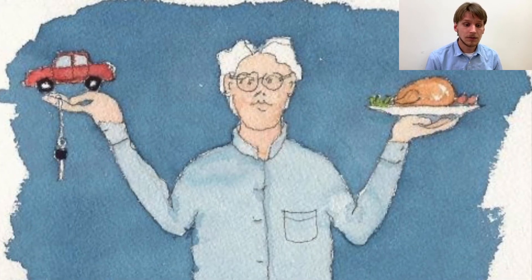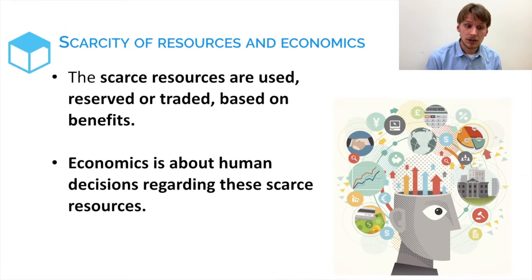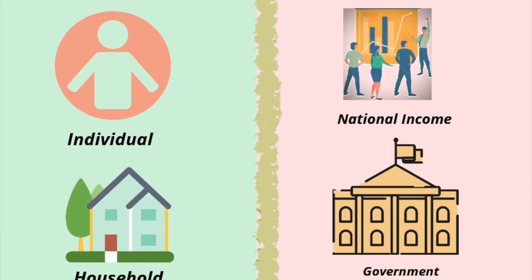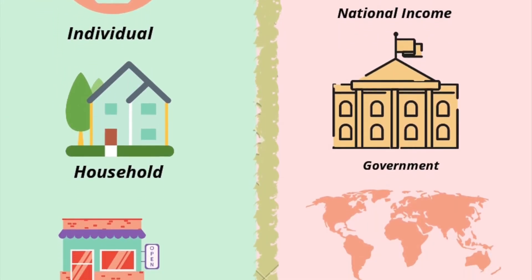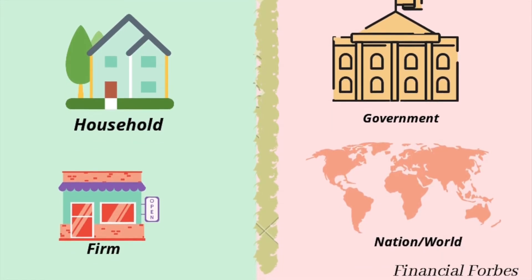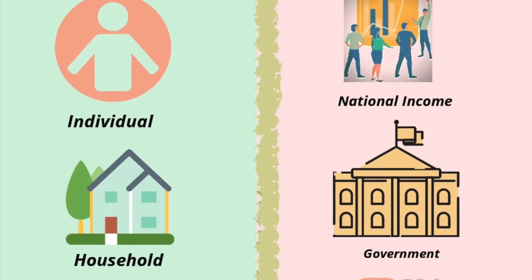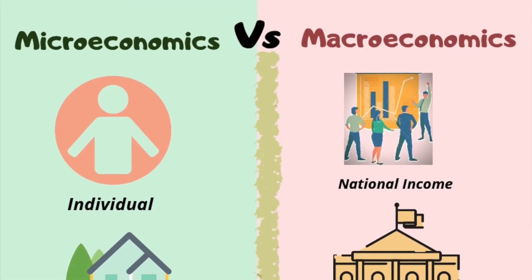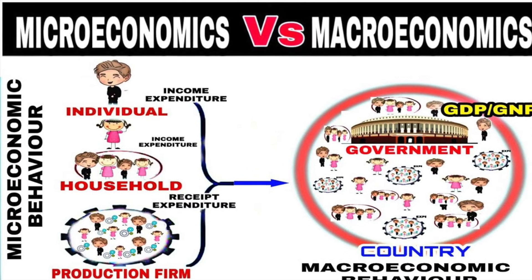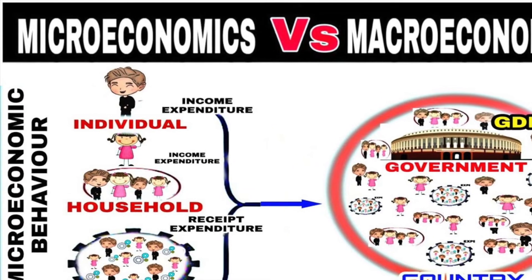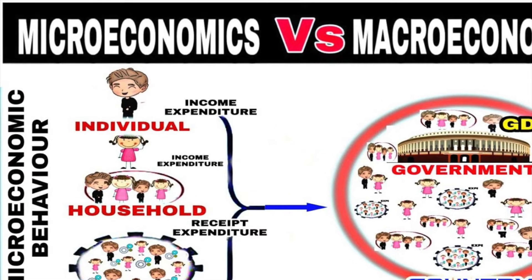Economics is all about human decisions regarding scarce resources and the consequences that follow from making those decisions. Economists study both individuals, firms, and families. The study of these small units — families, individuals, and firms — is called microeconomics.